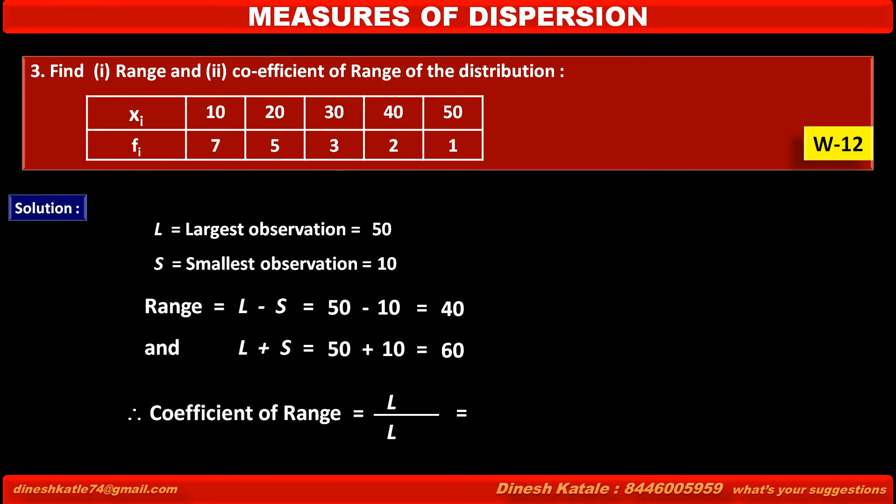The value of L minus S is 40 upon the value of L plus S, which is 60, is equal to 2 upon 3, is equal to 0.67. This is the coefficient of range.